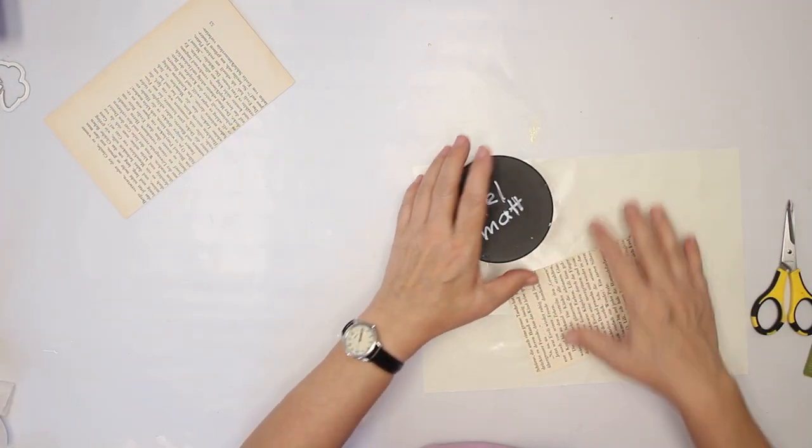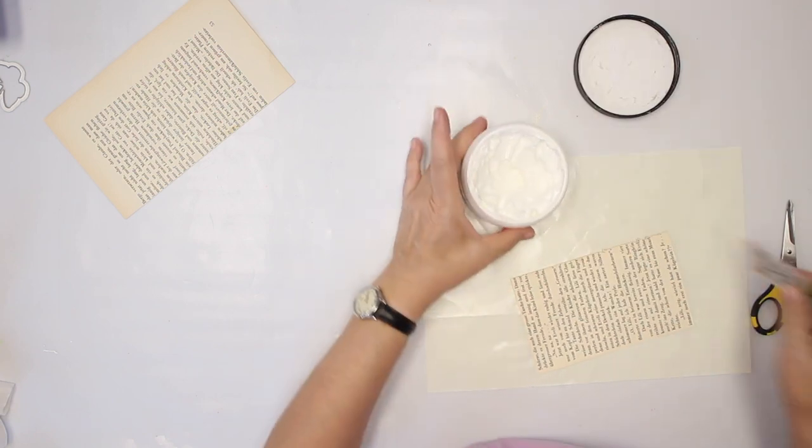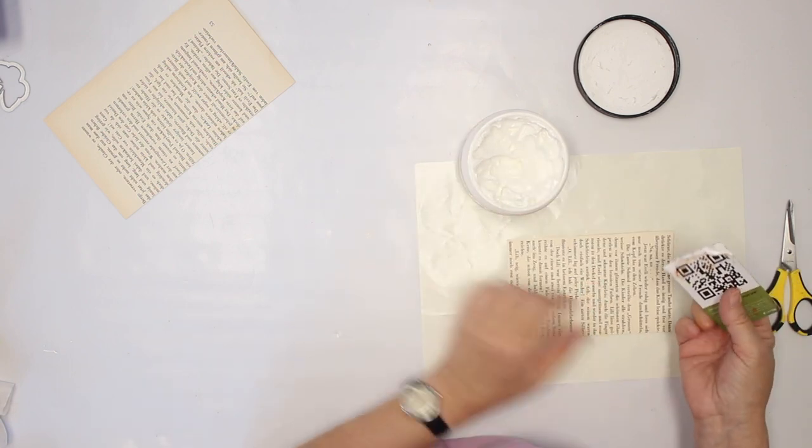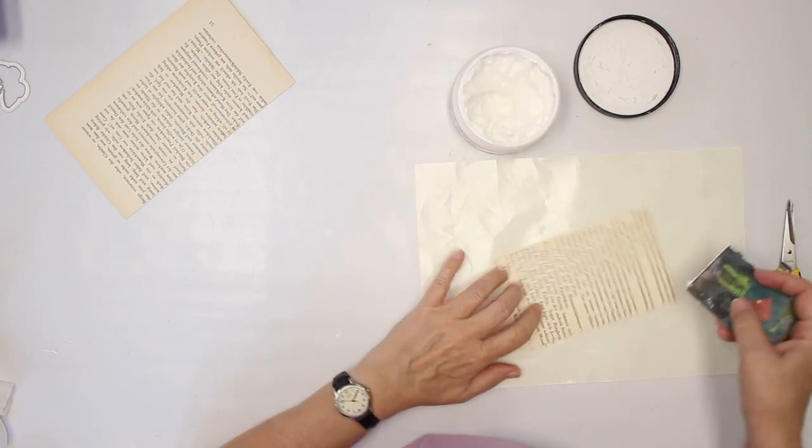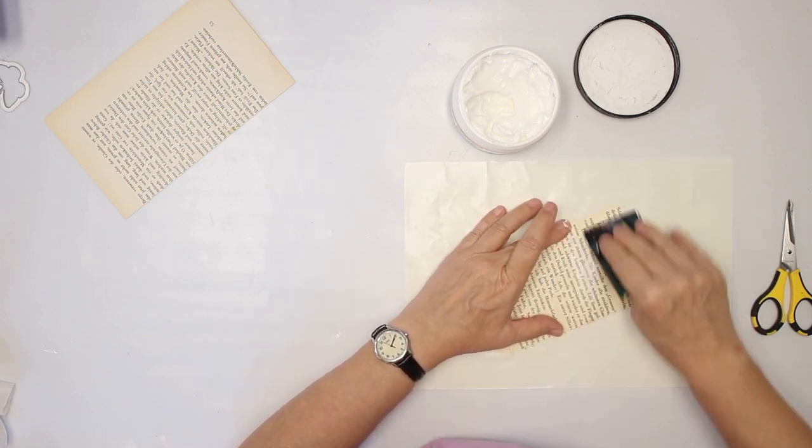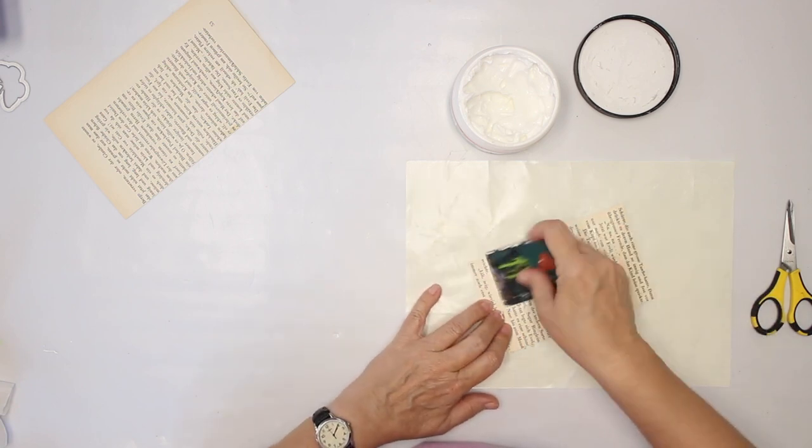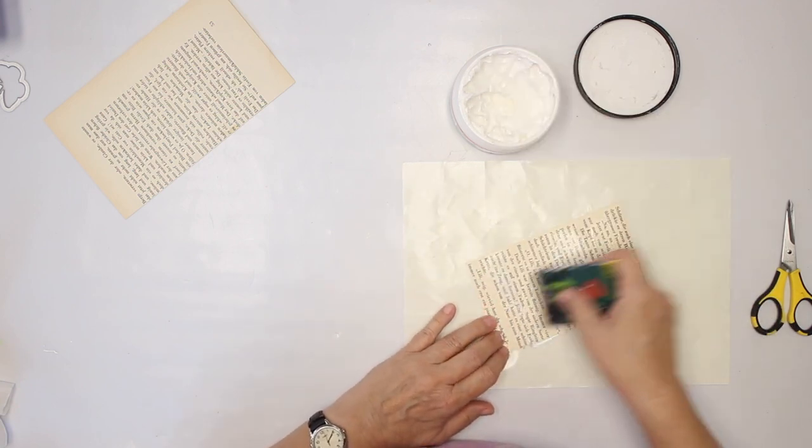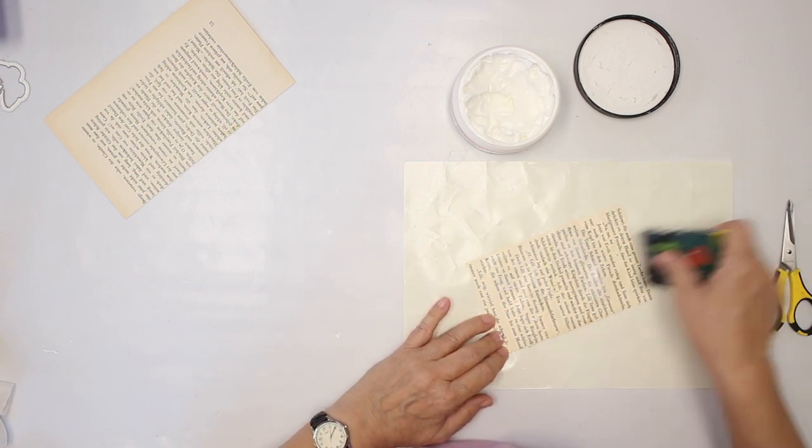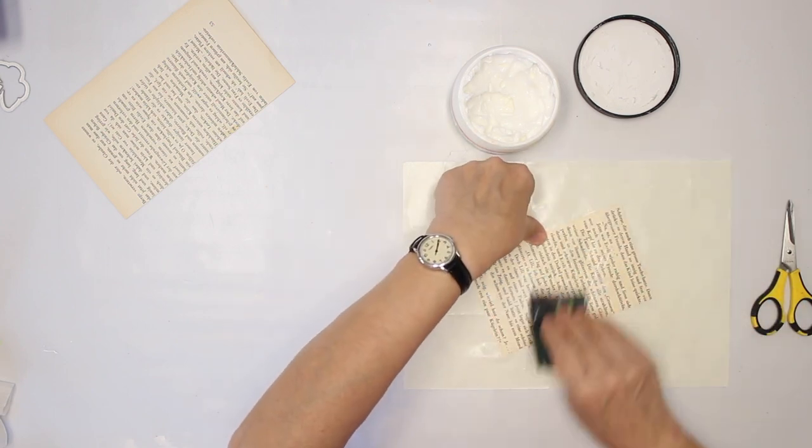I'm gonna use gel matte. I want some kind of a gel product, not a liquid one. And I'm gonna add a thin layer. That's why I use the credit card or gift card. You could use a palette knife instead. I just want to make sure that I have it everywhere but I don't want really heavy layers.